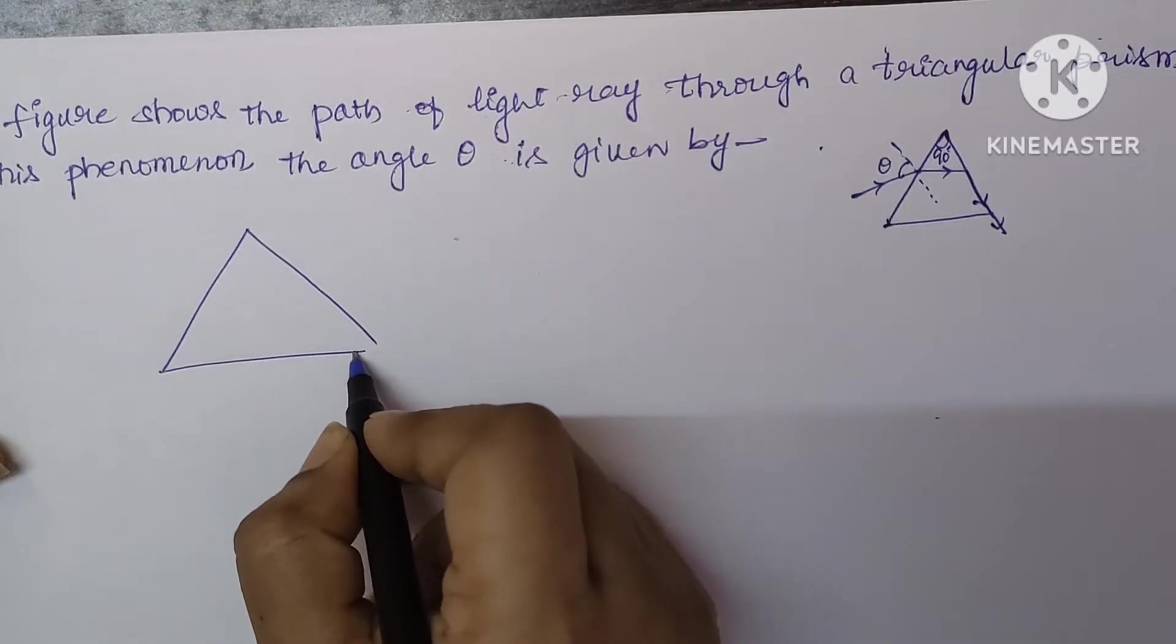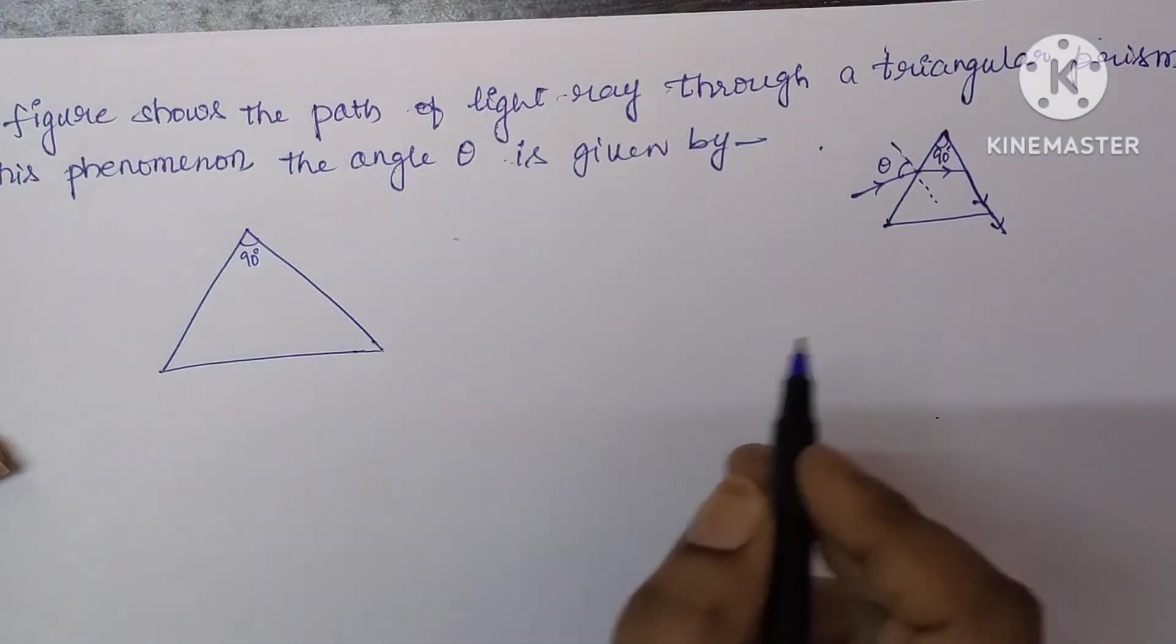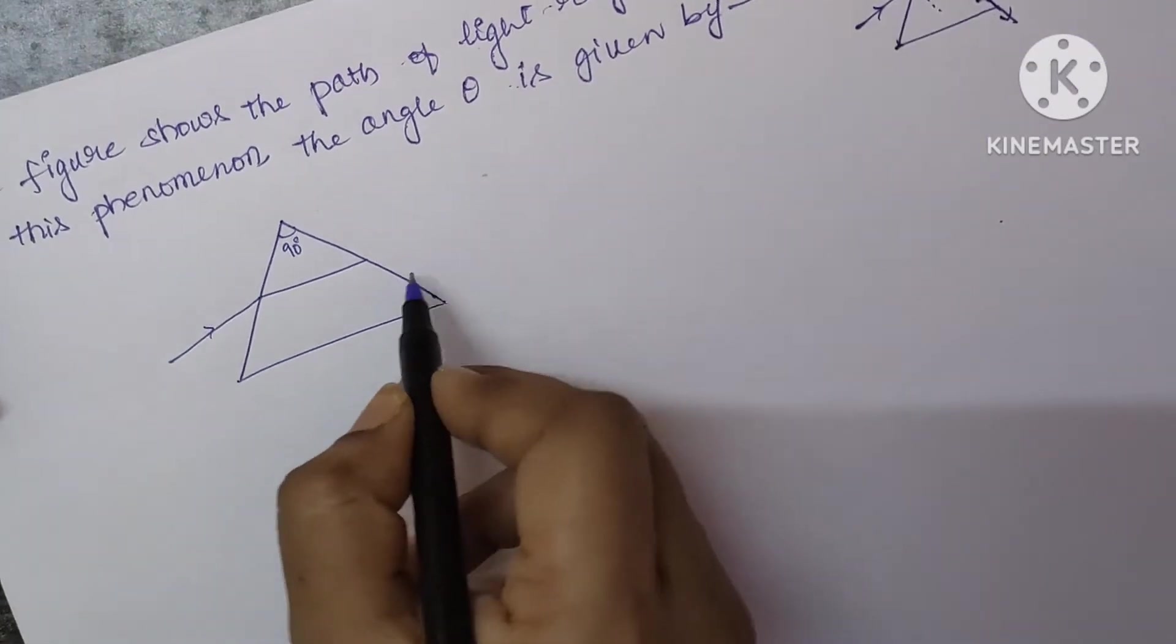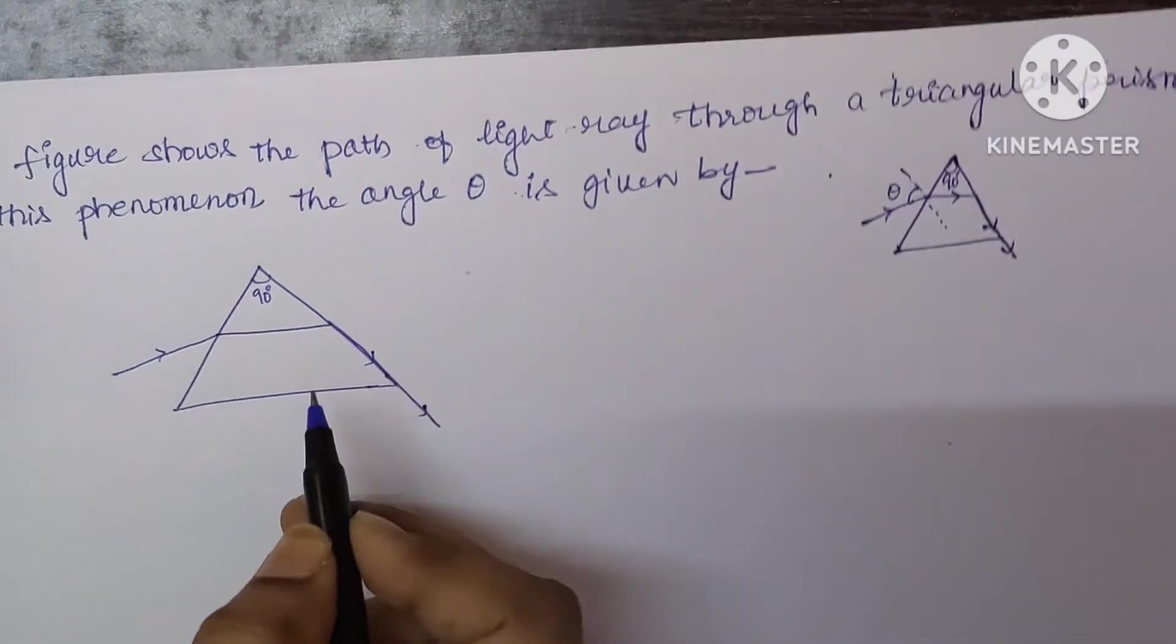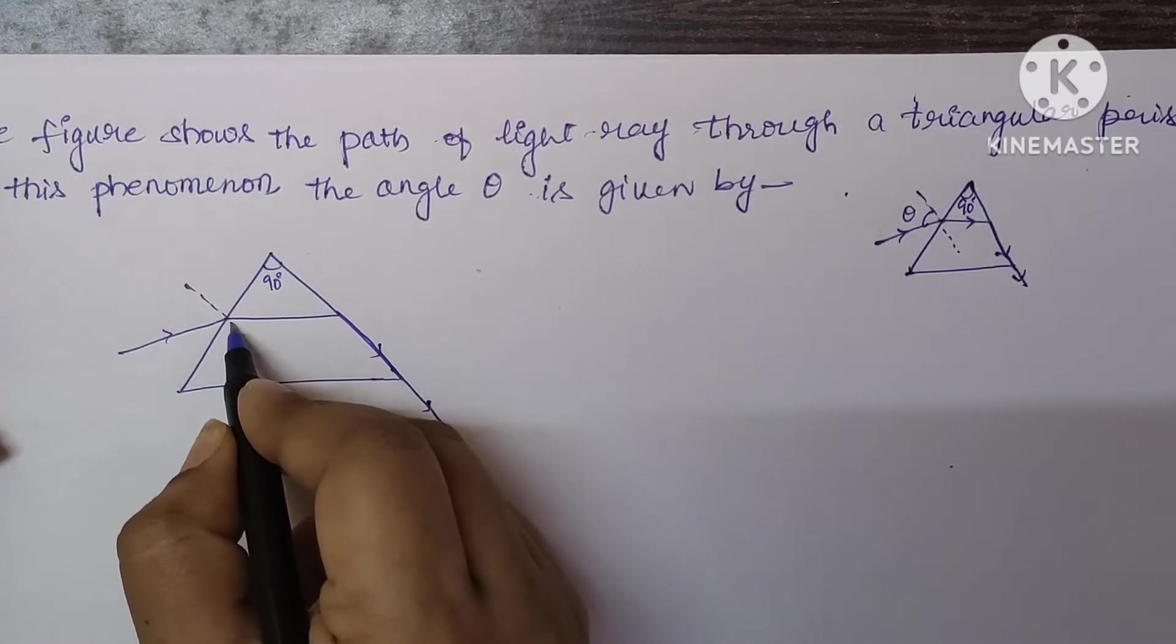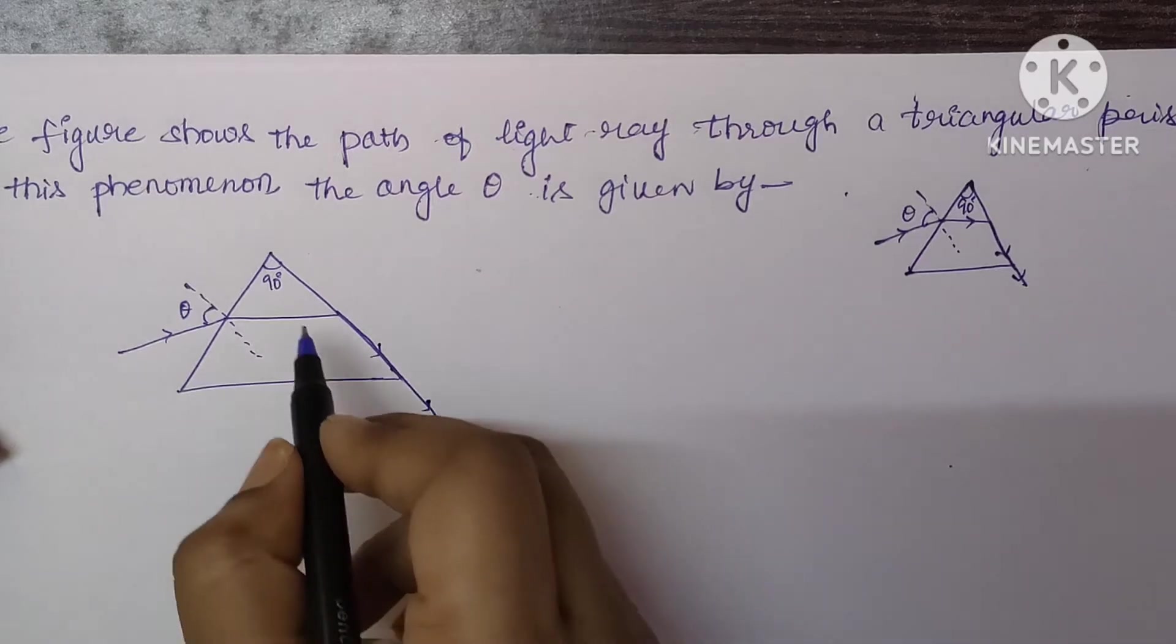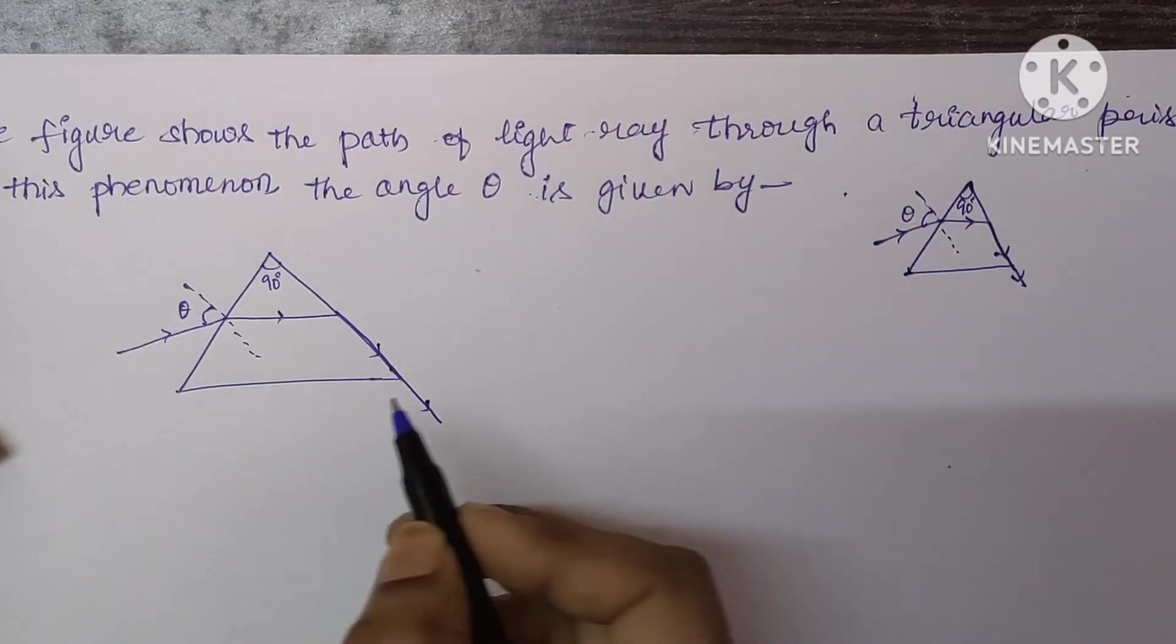This is given. Here the angle of the prism is 90 degrees and the ray is incident and refracted through like this. So this is the given diagram. Let's draw the normal here. The angle between incident ray and the normal is angle of incidence. And this is the refracted ray.